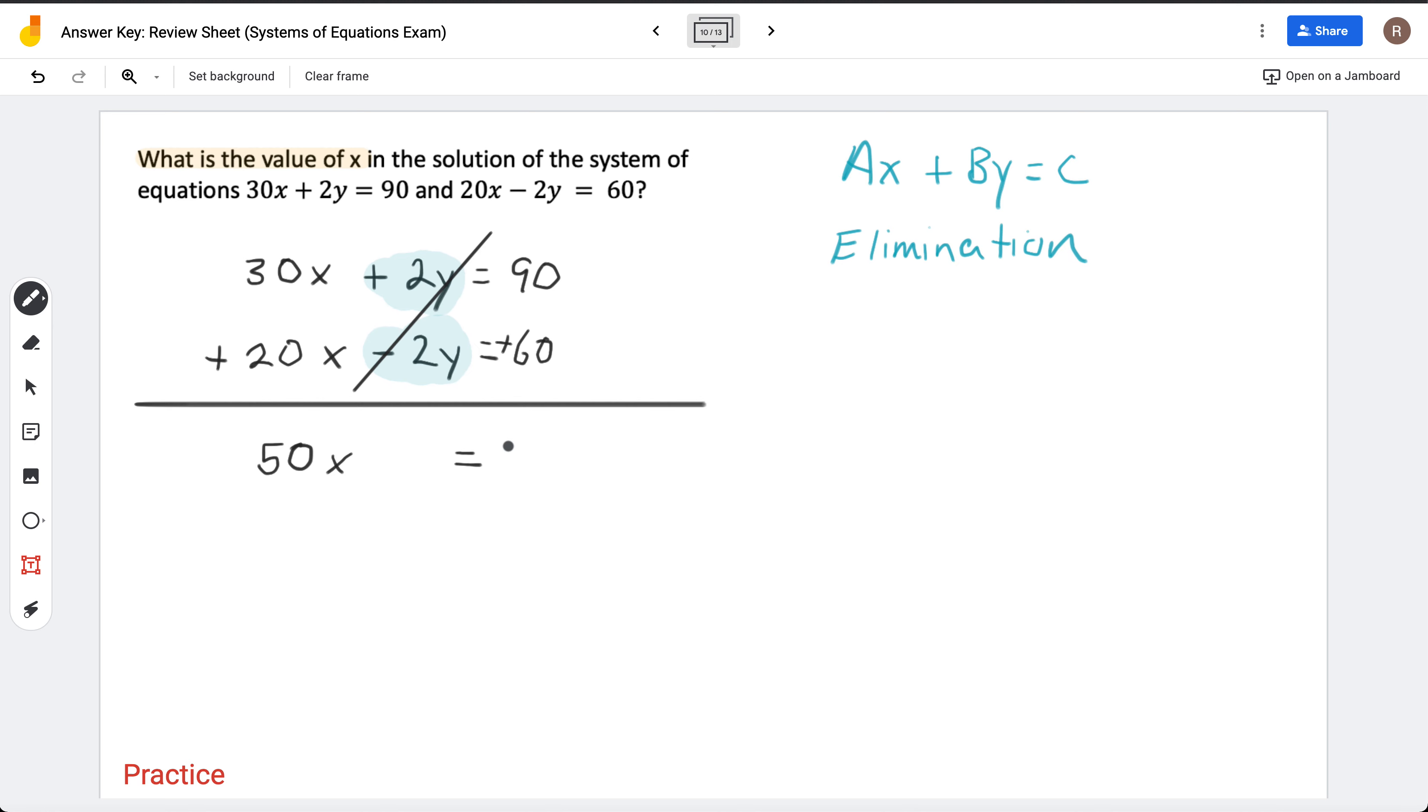Now, all we have to do is solve for x. If I have 50 times x equals 150, I divide by 50 to both sides. x is equal to 3.